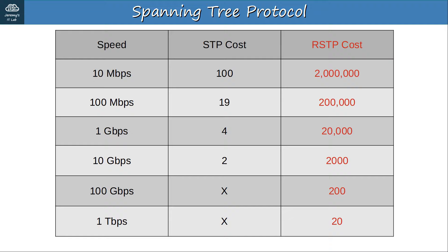Now let's look at some differences between STP and RSTP. First, port costs were updated for rapid spanning tree. Classic spanning tree defines port speeds up to 10 gigabits per second. To accommodate for faster speeds, RSTP's cost values were expanded: 2,000,000 for 10 Mbps, 200,000 for 100 Mbps, 20,000 for 1 Gbps, 2,000 for 10 Gbps, 200 for 100 Gbps, 20 for 1 Tbps, and 2 for 10 Tbps. Use the flashcards to remember the port costs of both classic and rapid STP.